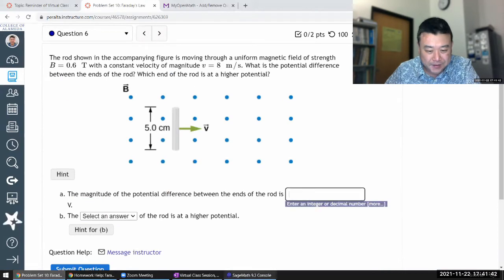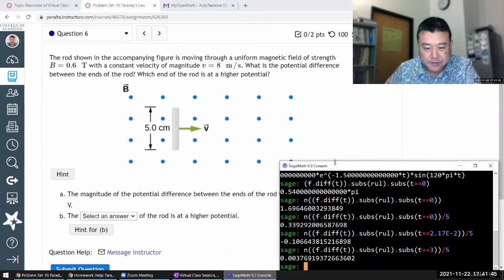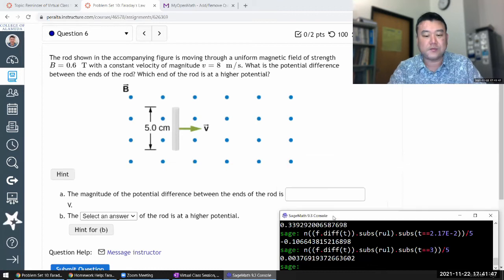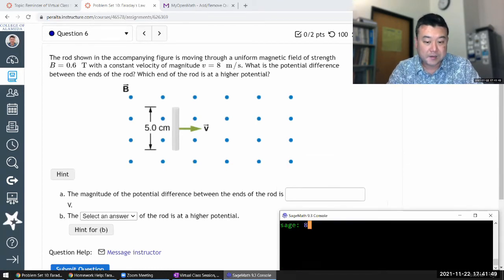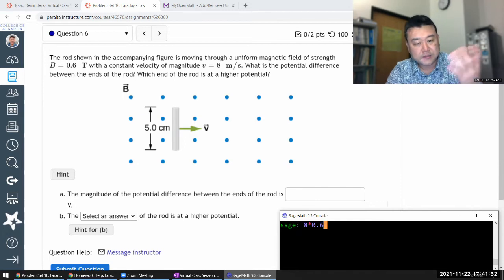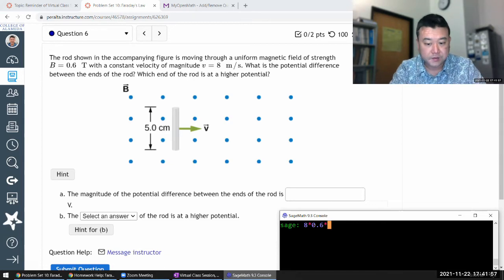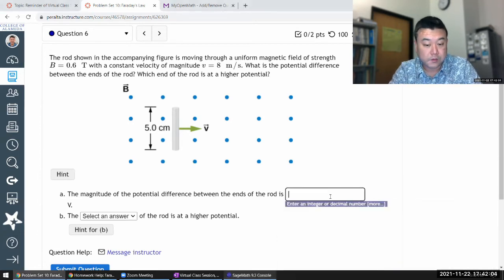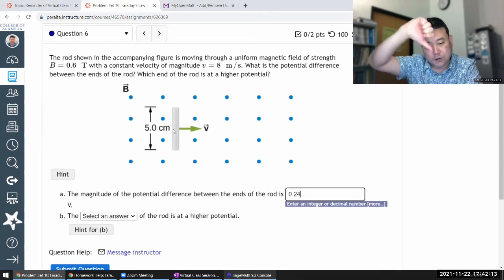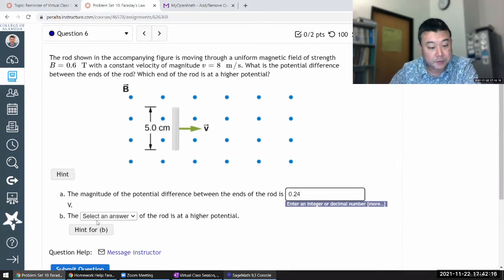So the number here, let me just do the calculation quickly. So that is going to be speed, 8, times the magnetic field, 0.6 tesla, times the separation, but I need to plug that in in basic SI unit, so 0.05 meter. So that's in volts. So 0.24 volts will be my potential difference between the two ends of the rod. And on the basis that this setup pushes positive charges downward, I'm going to say the top end is at a higher potential.